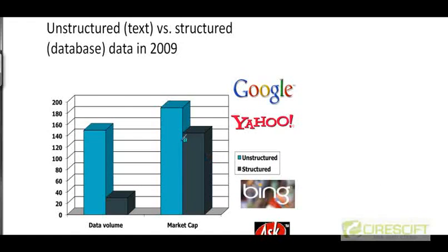But 13 or 14 years later, the scenario is quite different. The amount of unstructured data has grown even more relative to structured data. But this time, if you look at the market cap of companies processing unstructured data — companies like Google, Yahoo, Microsoft, Ask, and so on — there is a huge amount of money being made by processing unstructured data, more than the amount being made from structured data. This indicates the growing importance of the field of information retrieval in the industry in the last 10 to 15 years.